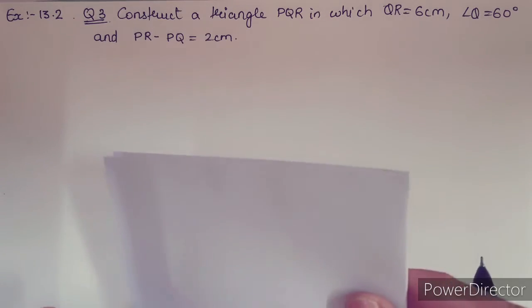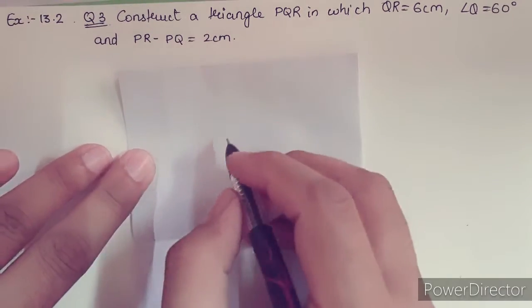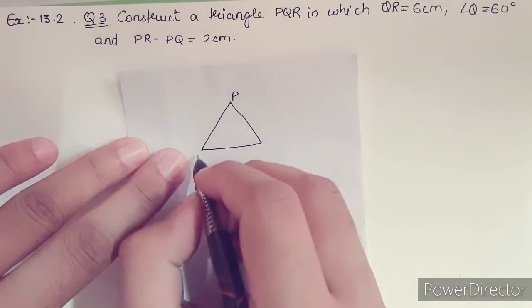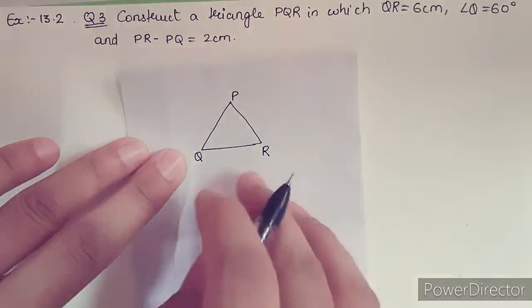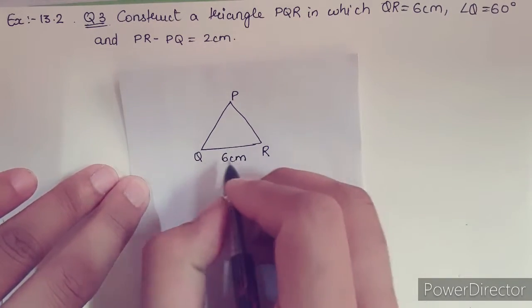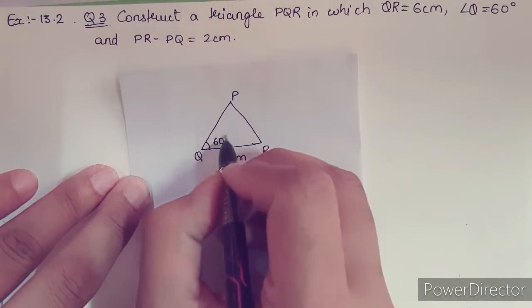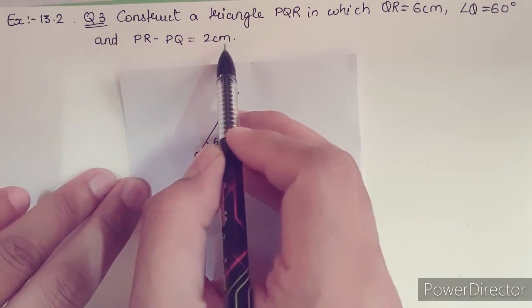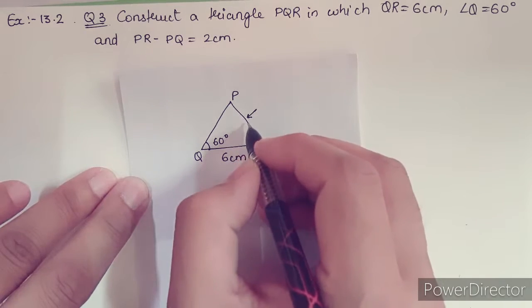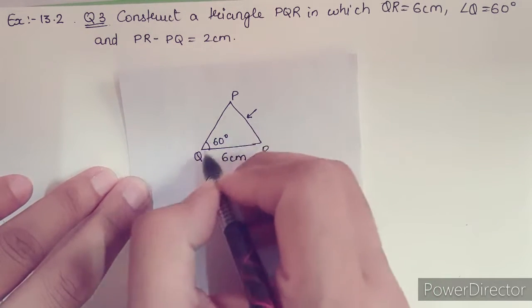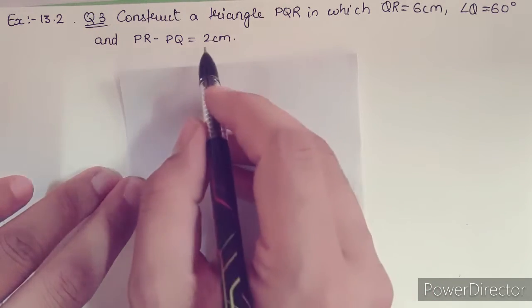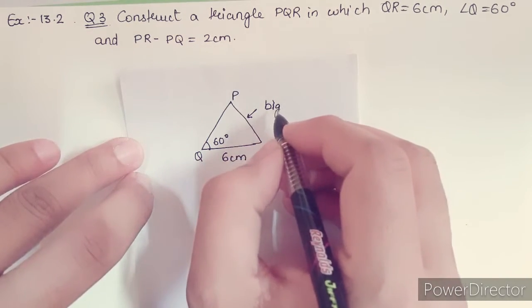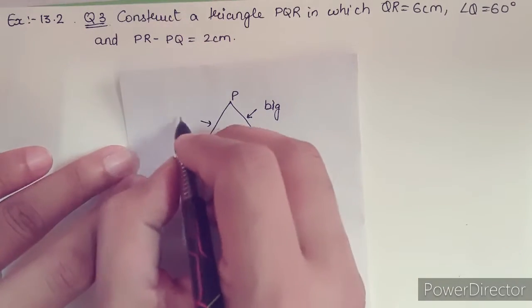Let us understand the question. We need to construct a triangle PQR in which QR is 6 cm, angle Q is 60 degrees. Now if you see PR minus PQ equals 2 cm, that means PR minus PQ will give us 2 cm. In that sense, PR will be big and PQ must be small.